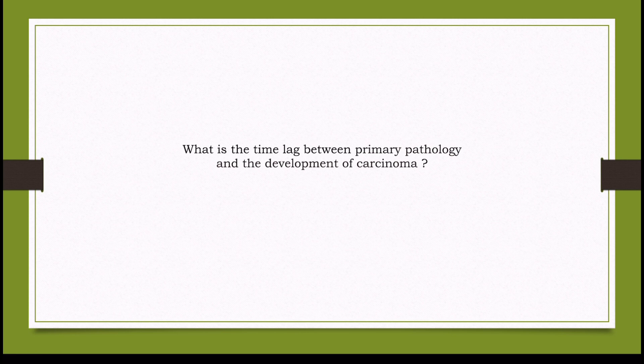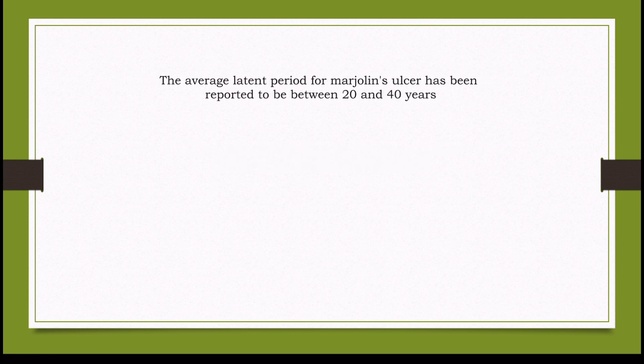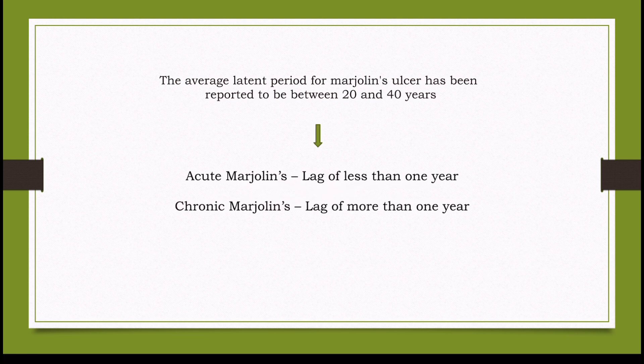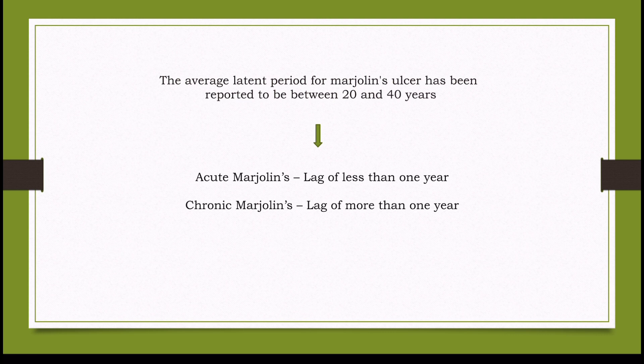What is the time lag between primary pathology and development of carcinoma? Characteristically there is a latent period between the primary pathology and carcinoma development. The average latent period for Marjolin's ulcer has been reported to be between 20 and 40 years. Based on this time lag, two types are described: acute form, where lag is less than one year, and chronic form, where lag is more than one year. The acute form is more common in the elderly, as their skin is more prone to genetic damage and faulty DNA repair due to aging.